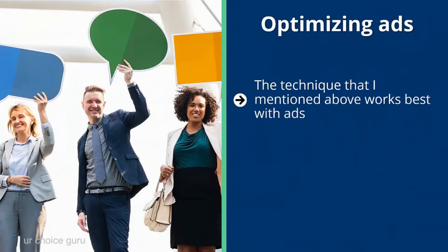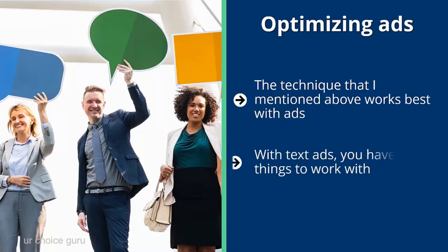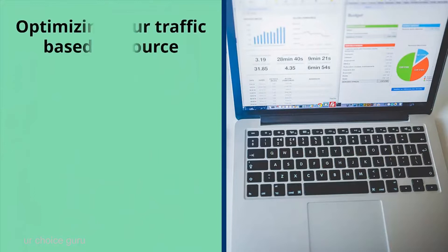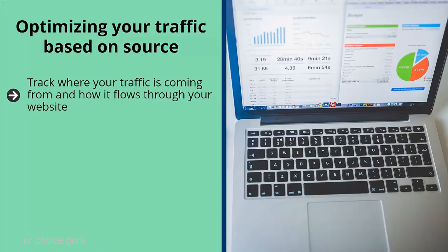Optimizing ads: this technique works best with ads. It doesn't matter whether you're dealing with text ads or graphical ads. For graphical ads, the elements are the pictures, colors, text, and layout. Experiment with these, change them up, test them, and pick the best combination in terms of conversions. With text ads you have fewer things to work with — the title, description, and maybe a small graphic. Use the systematic elemental optimization approach to identify the winner. Optimizing your traffic based on source: track where your traffic is coming from and how it flows through your website.